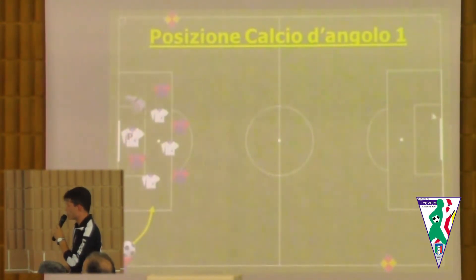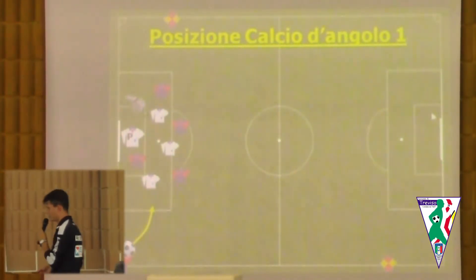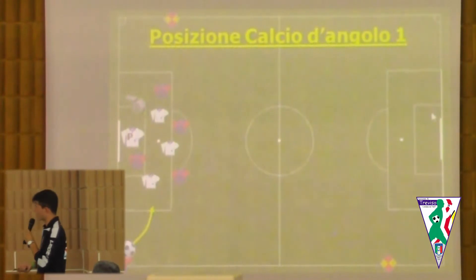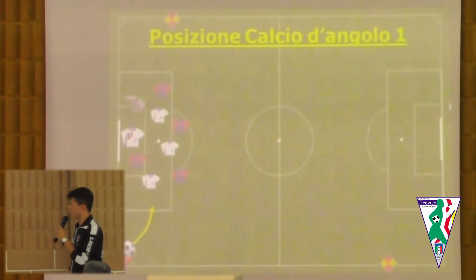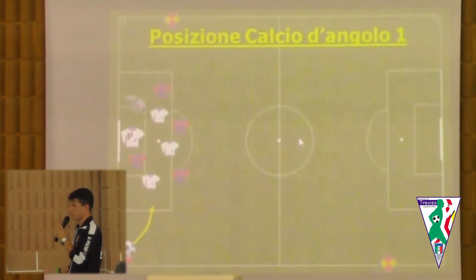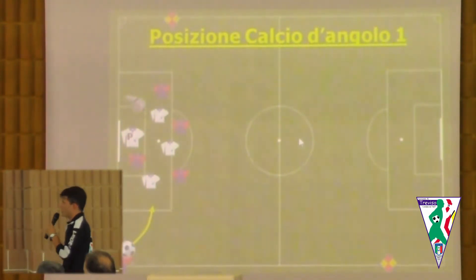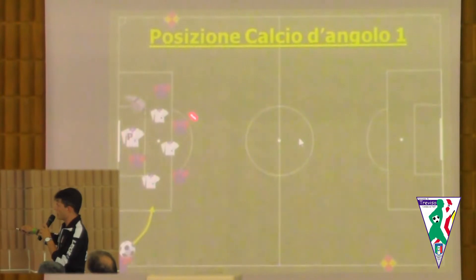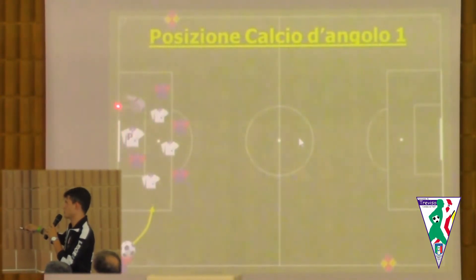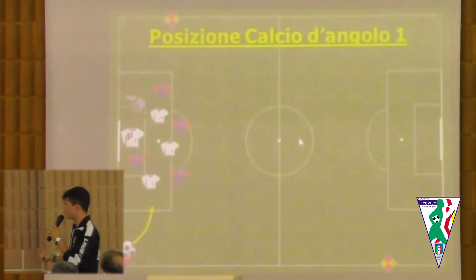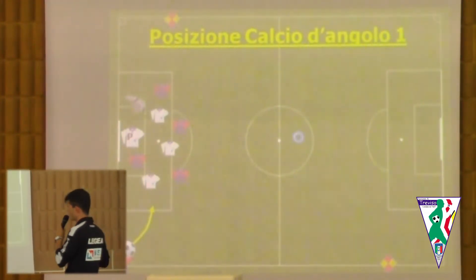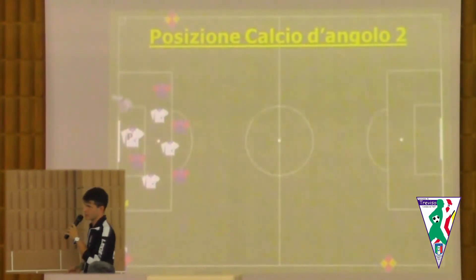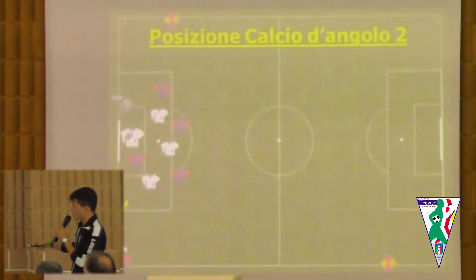A livello di calcio d'angolo dobbiamo chiederci come viene battuto: a rientrare, come in questo caso, o ad uscire. Se il calcio d'angolo è a rientrare, non ho criticità di possibile palla che sul cross esca dalla linea di fondo. Per ovvi motivi andrò a cercare di attenzionare le coppie dentro l'area di rigore, spostandomi due o tre metri verso l'interno del terreno di gioco. Viceversa, se il tiro sarà ad uscire ho la priorità anche di valutazione della traiettoria: il pallone potrebbe uscire, quindi dovrò mettermi qui.